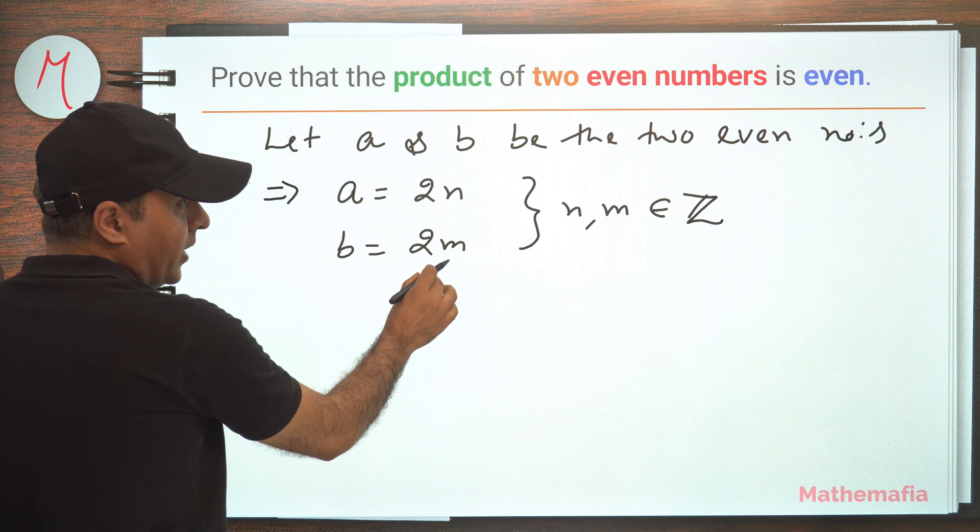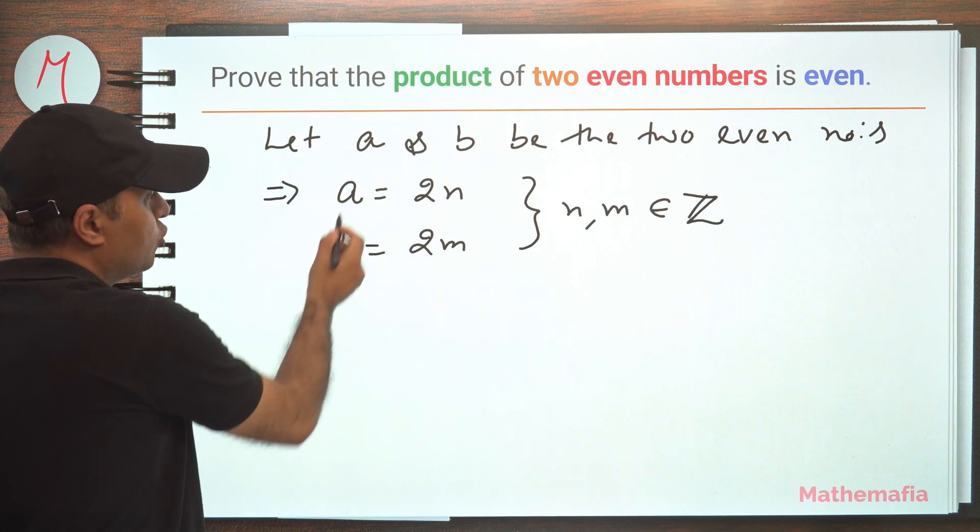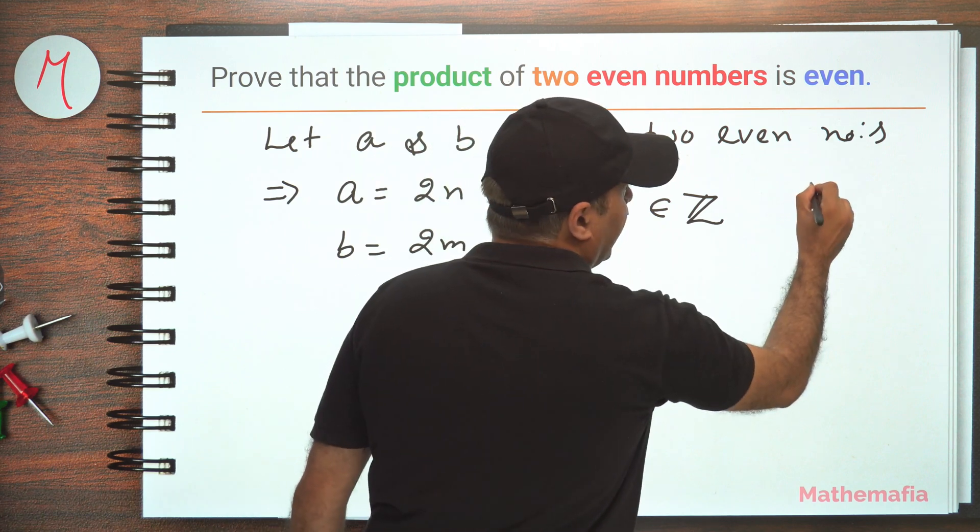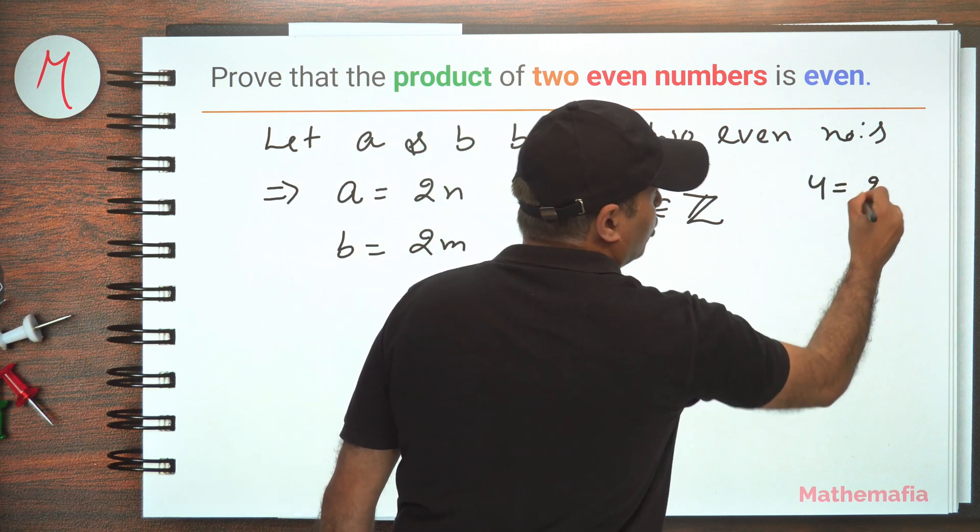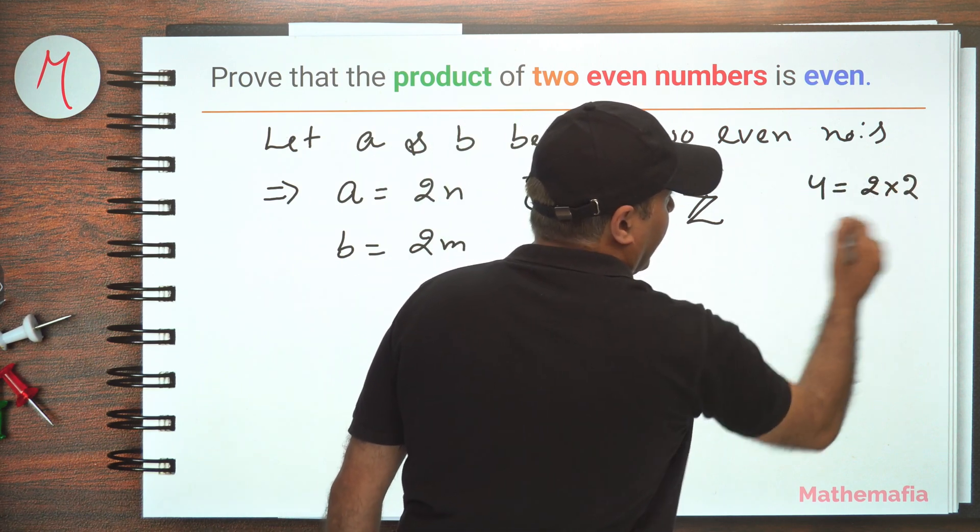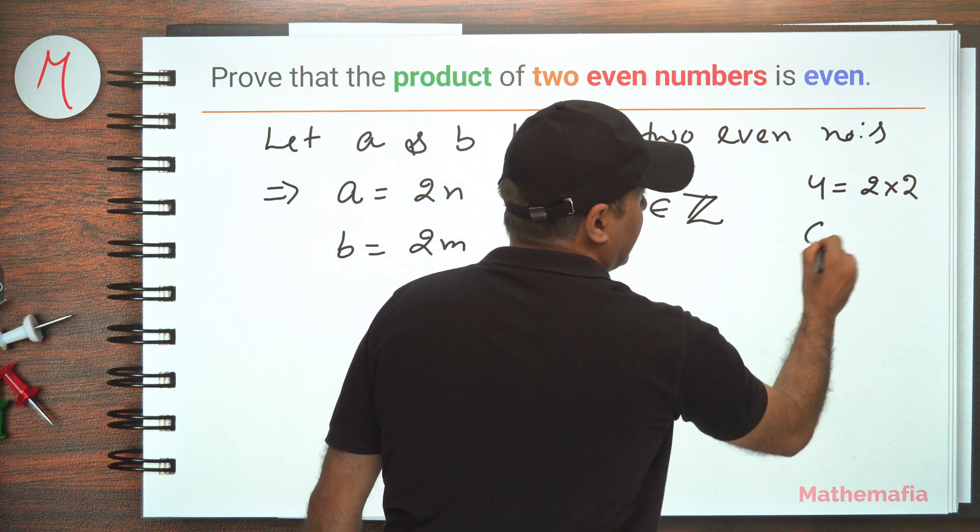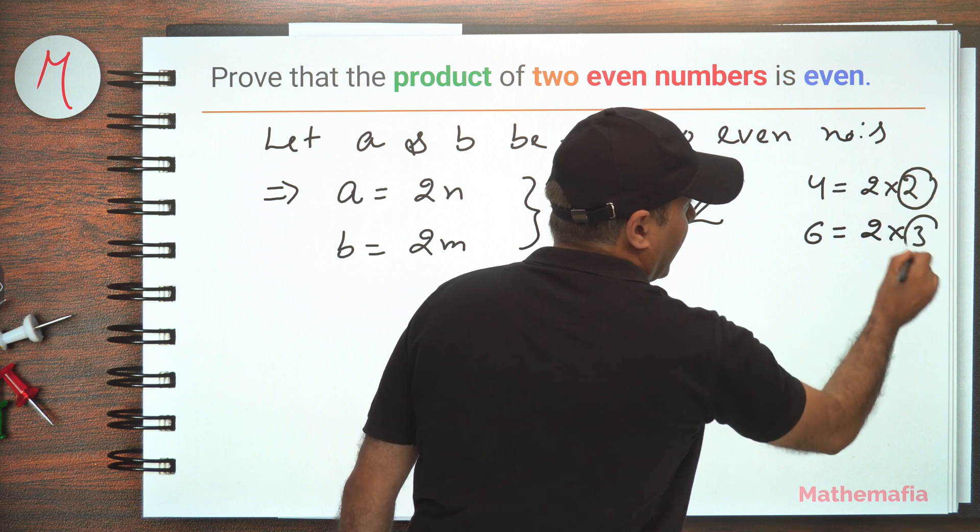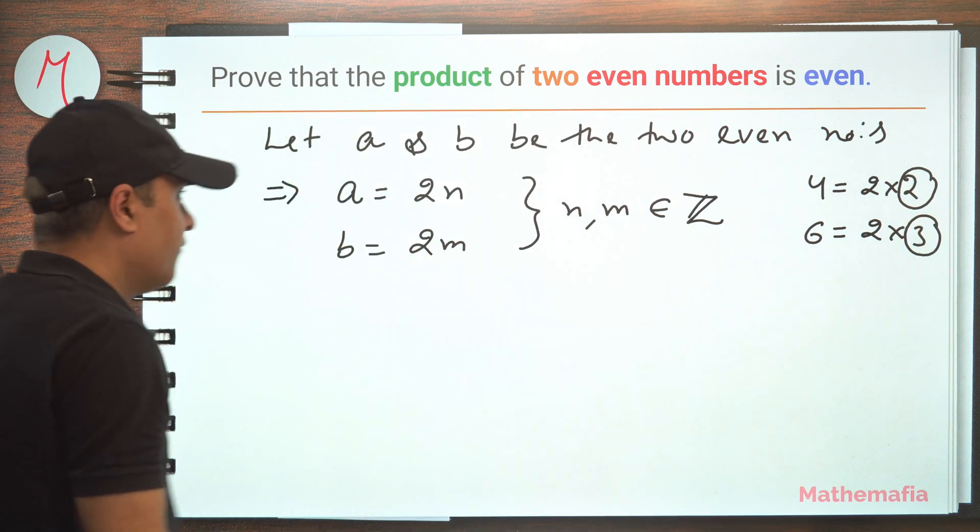Why n here and m here? Because these two can be two different even numbers. For example, a can be 4, which is 2 times 2, and b can be 6, which is 2 times 3. So this is my n, this is my m, so these can be different.